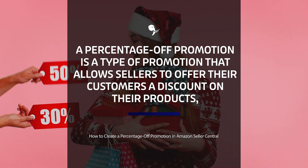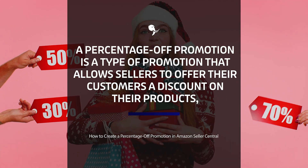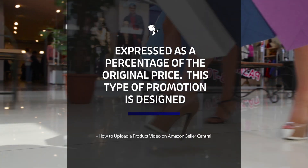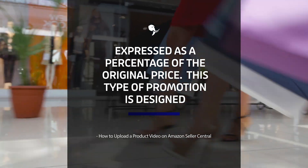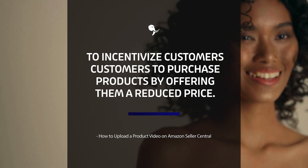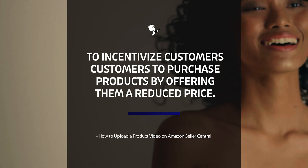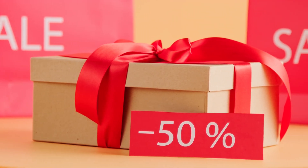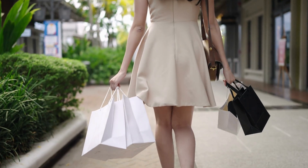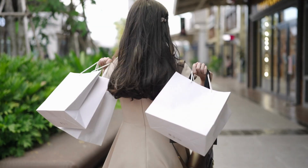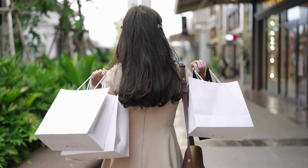A percentage off promotion in Amazon Seller Central is a type of promotion that allows sellers to offer their customers a discount on their products expressed as a percentage of the original price. This type of promotion is designed to incentivize customers to purchase products by offering them a reduced price. For example, a seller can offer a promotion of 20% off on a specific product, which means that customers who purchase the product during the promotional period will receive a discount of 20% off the original price.